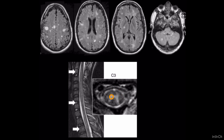Only white matter is involved. As you can appreciate, this H-shape structure is the gray matter, and you can clearly see the shape of the H. This shows there is sparing of the gray matter of the spinal cord but involvement of the white matter of the spinal cord.